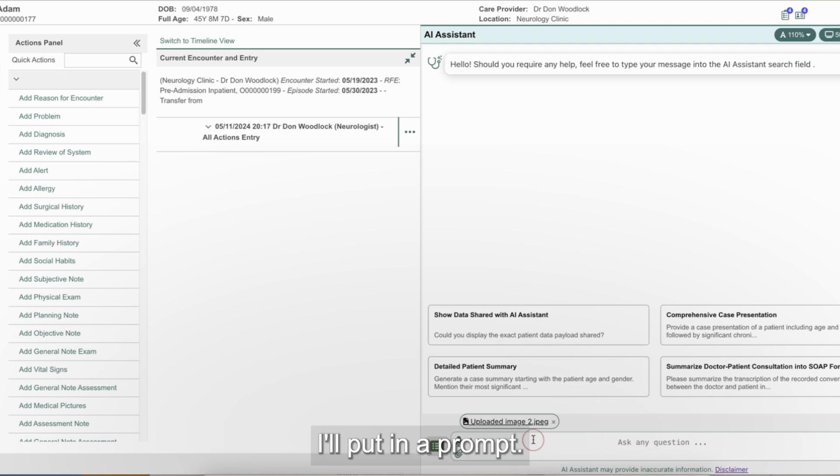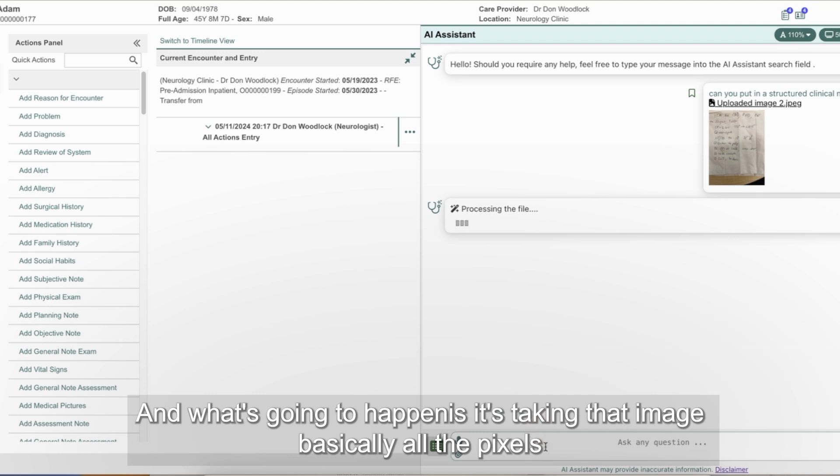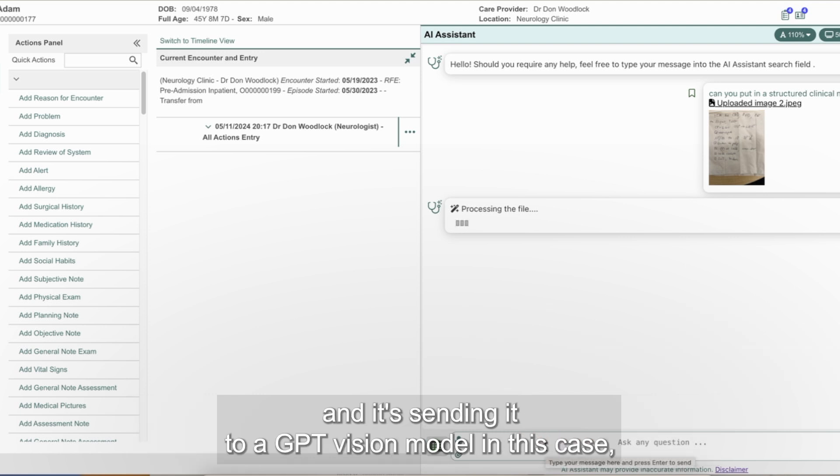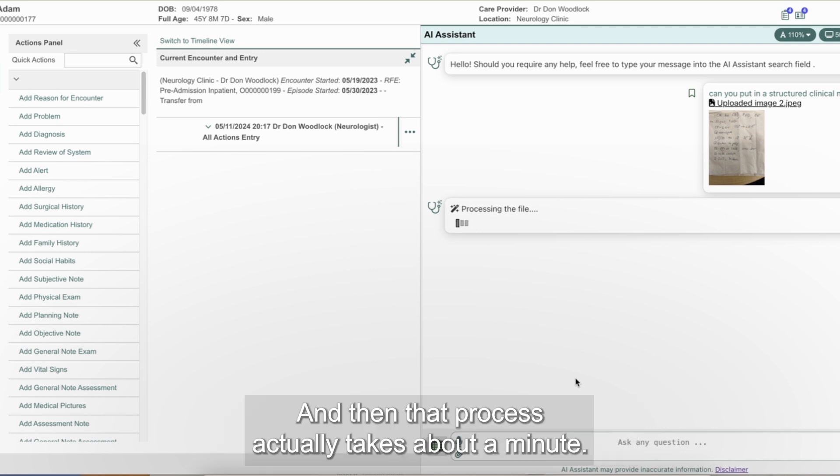I'll put in a prompt. Can you put in a structured clinical note? And what's going to happen is it's taking that image, basically all the pixels, and it's sending it to a GPT vision model in this case. And that's turning that into raw text, basically what's written on the napkin. And then that process actually takes about a minute. So I'm going to speed it up now.